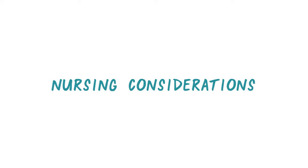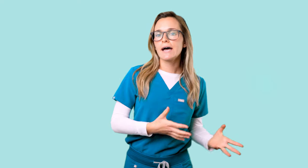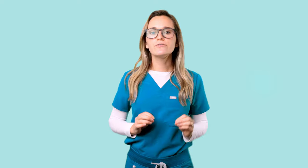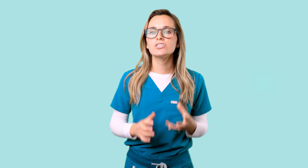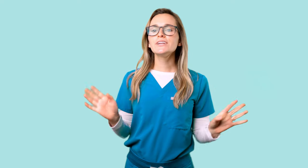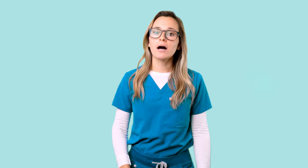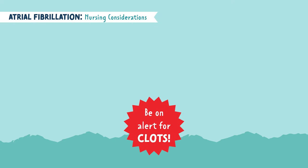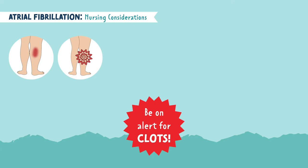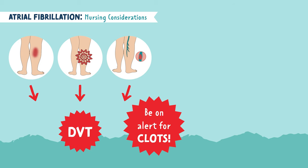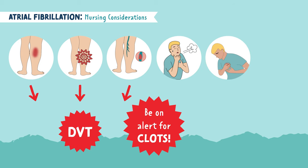Since this client is on anticoagulation therapy such as heparin and warfarin, there are a lot of nursing considerations and patient teaching that will follow. I have an entire video on heparin and warfarin, so for more details go ahead and watch that video. Since AFib puts the client at risk for clots, we want to monitor for signs and symptoms of blood clots. Tenderness, warmth, or redness to one calf can indicate a DVT. Shortness of breath, chest discomfort, trouble breathing, or a feeling of panic can indicate a PE.